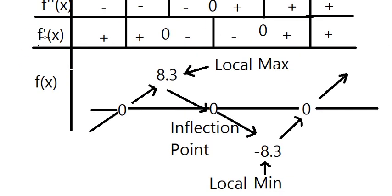Based on the first derivative, we can find the increasing and decreasing intervals of the function. We know that minus 1.5 is a local minimum, because the derivative changes from negative to positive. And 3.5 should be a local maximum, while minus 1.5 is a local minimum.